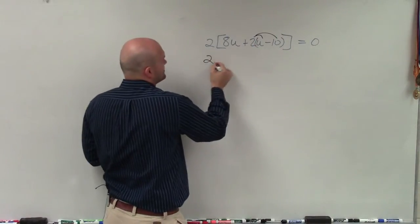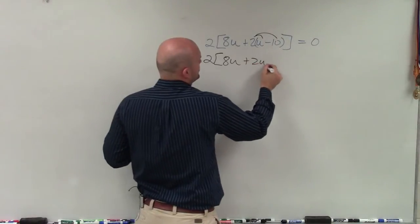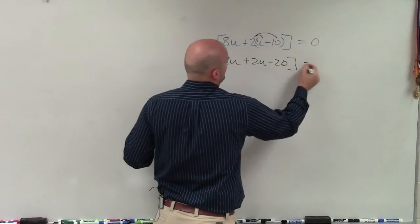So always start with the innermost parentheses and then work our way out. We can apply distributive property. So when I do that, I have 2 times 8u plus 2u minus 20 equals 0.